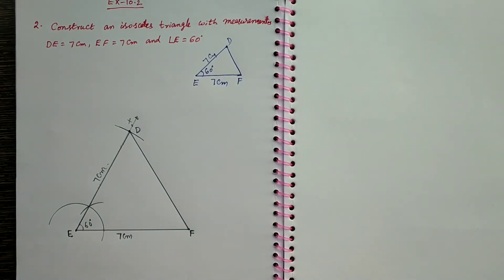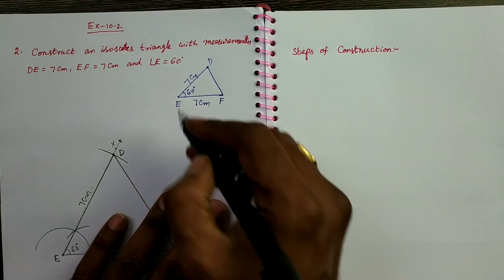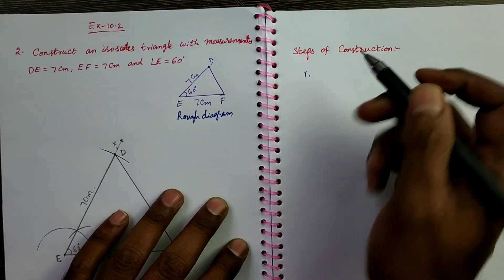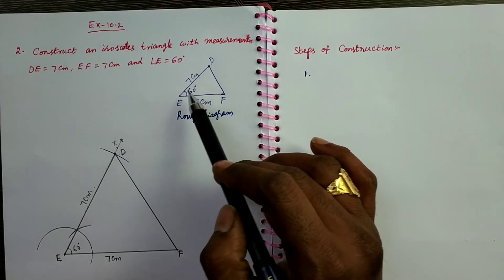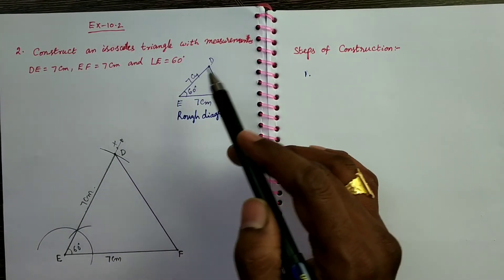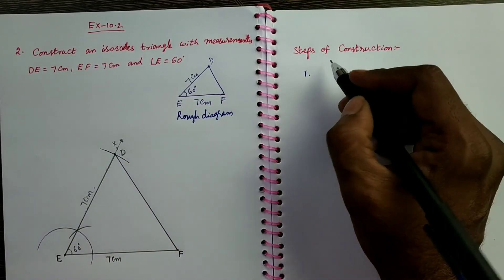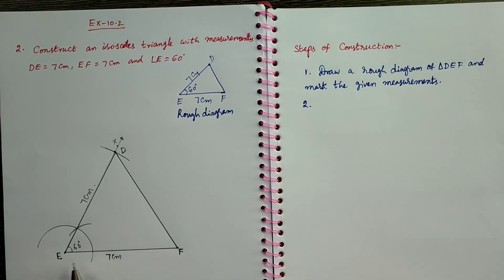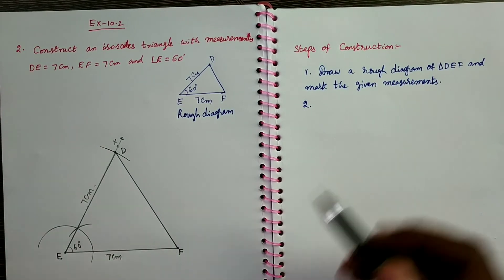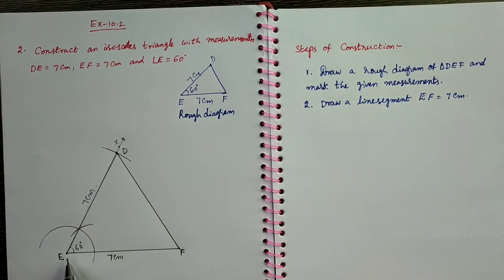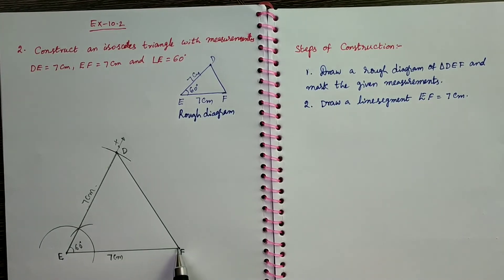Next, steps of construction. This is the rough diagram. Step 1 is draw a rough diagram of triangle DEF by using given measurements and mark the given measurements. The second step is draw a line segment EF equals 7 centimeters. Third step is draw a ray EX making an angle 60 degrees with EF.